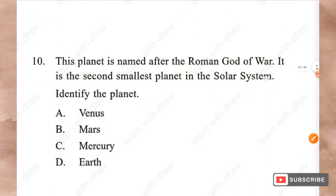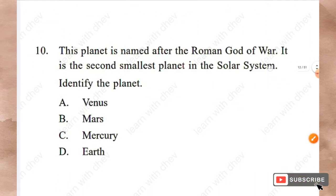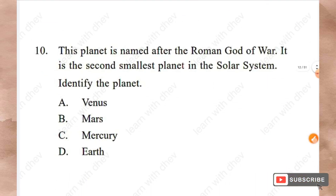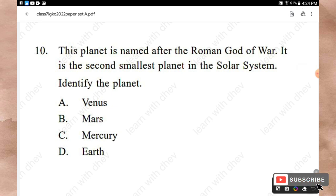Question 10: This planet is named after the Roman god of war and is the second smallest planet in the solar system. Options: Venus, Mars, Mercury, Earth. The right answer is Option B — Mars.